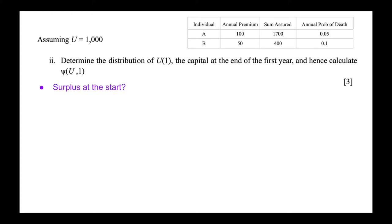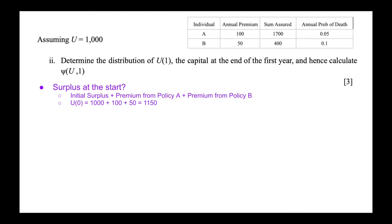We start with our surplus at the beginning. Surplus, capital, and reserves are interchangeable in ruin theory. At the start we have initial surplus plus the premium from policy A plus premium from policy B: 1,000 + 100 + 50 = 1,150. This is our capital at time zero. There's a slight nuance here: the initial surplus is 1,000, but our capital at time zero becomes 1,150 because premiums are received at the beginning of the year, unlike traditional ruin theory where premiums are received continuously.